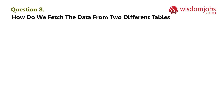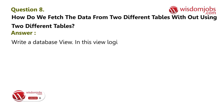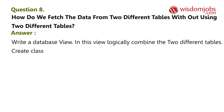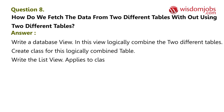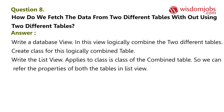Question 8: How do we fetch data from two different tables without using two different list views? Answer: Write a database view that logically combines the two different tables, create a class for this logically combined table, and write the list view with 'applies to' class set to the combined table class, so we can refer to properties of both tables in the list view.